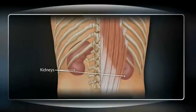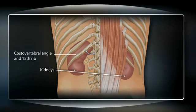The kidneys lie posteriorly, partly protected by the posterior ribs. The right kidney is slightly lower than the left. To assess for kidney tenderness, locate the costovertebral angles. They are posterior to, and below, the twelfth ribs lateral to the vertebrae.